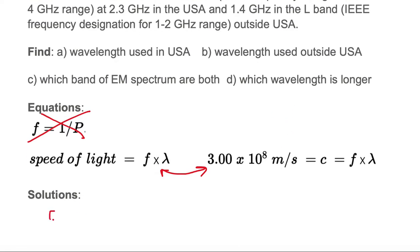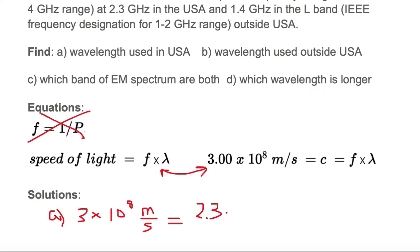Now let's solve part A — finding the wavelength for 2.3 gigahertz. We start with 3 times 10 to the 8th meters per second, and remember to keep units in the numerator and denominator. The frequency we're given is 2.3 gigahertz. Giga means 10 to the 9th, so that's 2.3 times 10 to the 9th hertz.